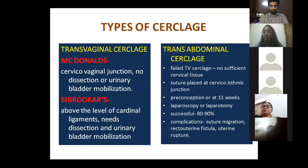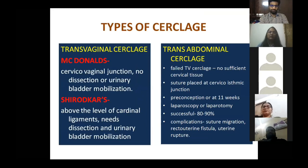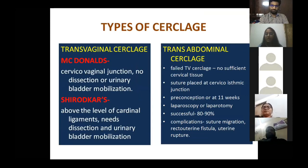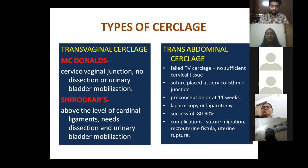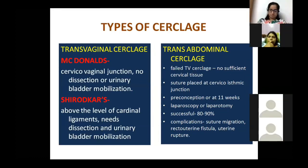Types of cerclage: transvaginal (McDonald's and Shirodkar) and transabdominal. Shirodkar gives better results but requires bladder dissection and mobilization. Transabdominal cerclage is useful when there is no cervical length remaining; it can be done laparoscopically or via laparotomy, either pre-conceptionally or before 11 weeks. The downside is that if a missed abortion occurs, these patients require cesarean section. The success rate of transabdominal cerclage is approximately 80–90 percent.